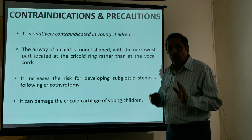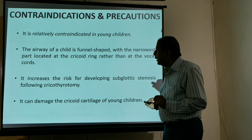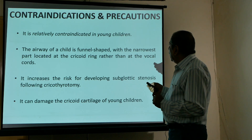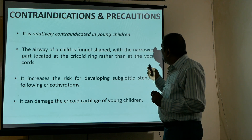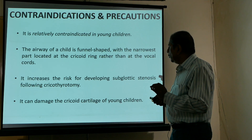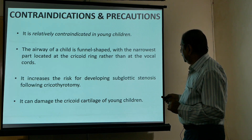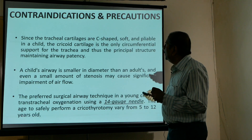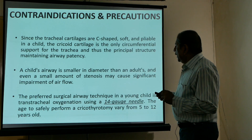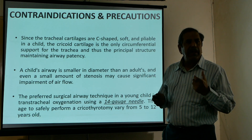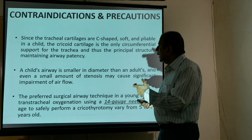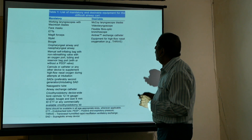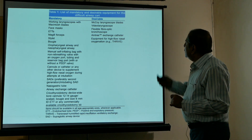There is absolutely no contraindication to doing cricothyroidotomy because it is a life-saving procedure. However, it should be avoided in young children, where needle cricothyroidotomy should be done instead. This is because children's tracheal rings are C-shaped and a surgical cricothyroidotomy can cause collapse of the airway.